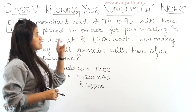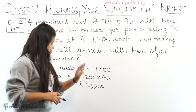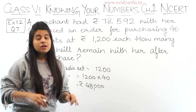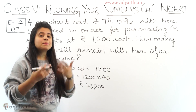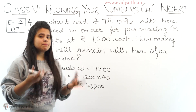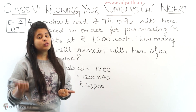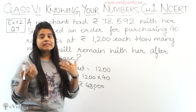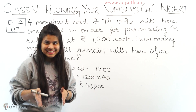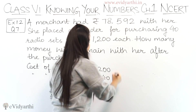The money she has is Rs. 78,000 something, and the purchase cost is Rs. 48,000. How much money is left? For that we will subtract. Simple — if you have Rs. 100 and spend Rs. 50, how much is left? We subtract to find out.